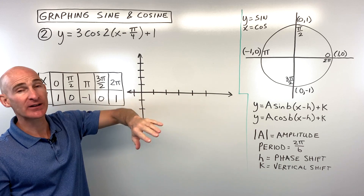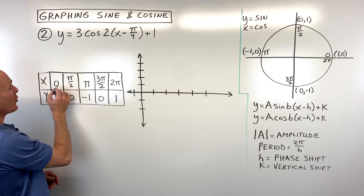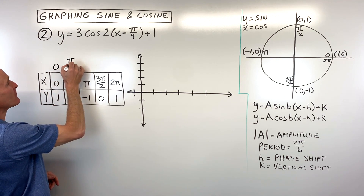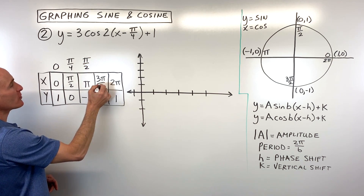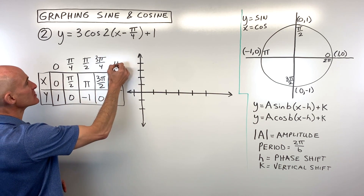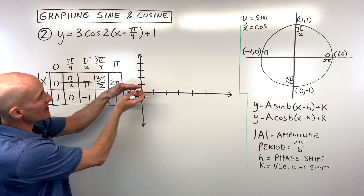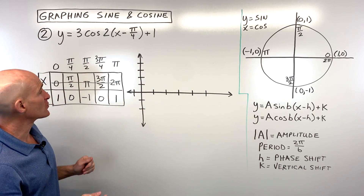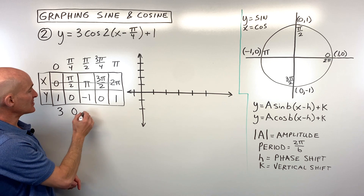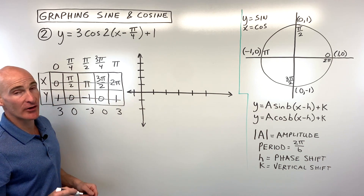Looking at the transformations: the two grouped with x has a reciprocal effect — it's multiplying all x-values by one-half, a horizontal shrink by a factor of one-half. So: 0·½ = 0, π/2·½ = π/4, π·½ = π/2, 3π/2·½ = 3π/4, and 2π·½ = π. Cross out the old x-values. The coefficient three in front of cosine represents the amplitude, so we multiply all y-values by three: 1→3, 0→0, -1→-3, 0→0, 1→3.